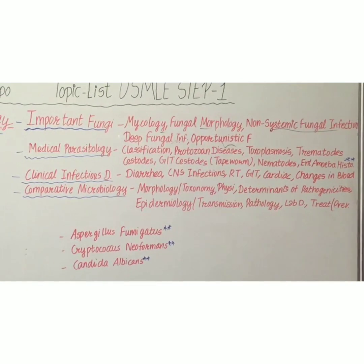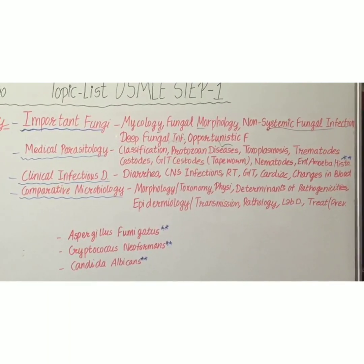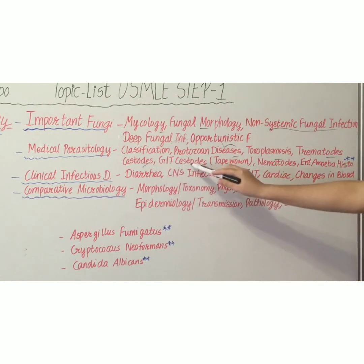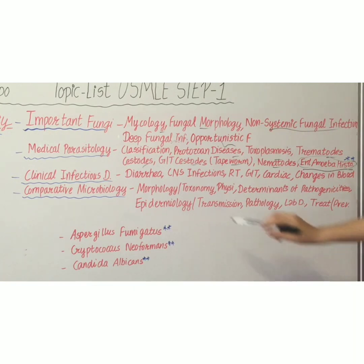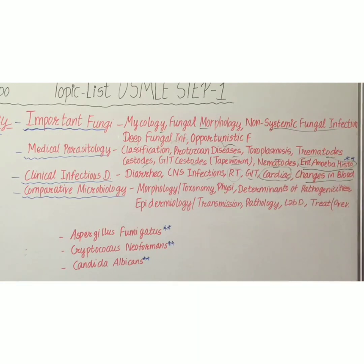The next topic is medical parasitology, covering classification of parasites, protozoan diseases, toxoplasmosis, trematodes, cestodes, GIT cestodes, tapeworms, nematodes, and Entamoeba histolytica — histolytica is a very important parasite. In clinical infectious diseases, important subtopics include diarrhea and GIT infections, CNS infections, respiratory tract infections, cardiac symptoms, and changes in blood cells.